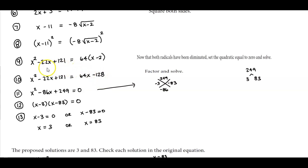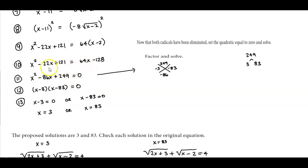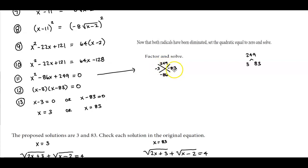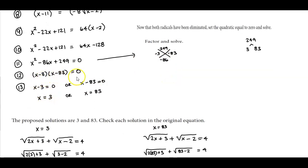Now that there are no more radicals, we rewrite this as a quadratic equation set equal to zero. Subtracting 64x from both sides gives minus 86x, and adding 128 to both sides gives 249. So we have x squared minus 86x plus 249 equals zero. Factoring, the two numbers that multiply to positive 249 and add to negative 86 are negative 3 and negative 83, giving us (x minus 3)(x minus 83) equals zero.